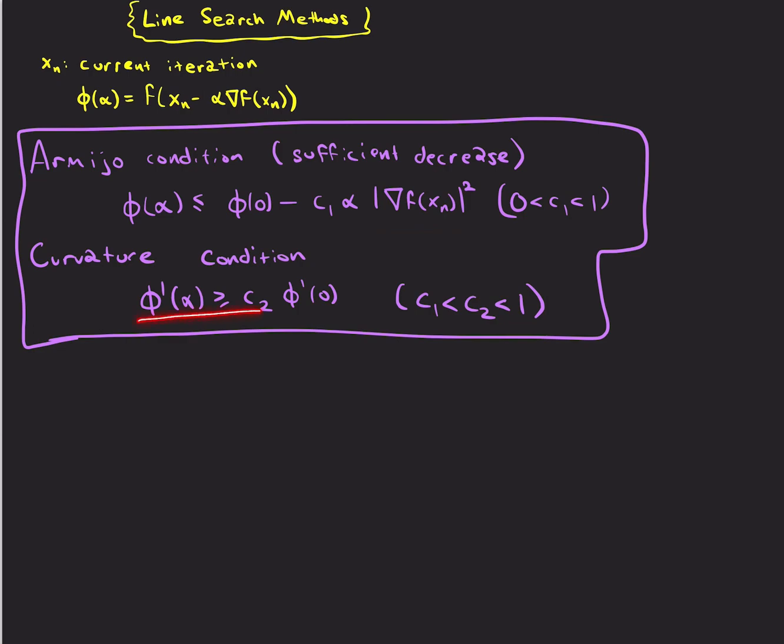And then the curvature condition is that the slope at α is greater than or equal to some constant times the slope at 0. And this gives us sufficiently large steps.